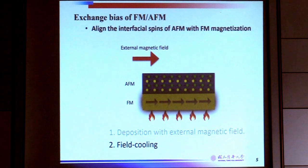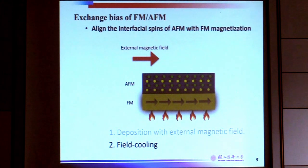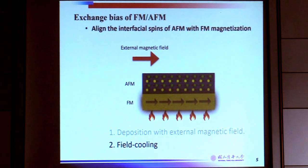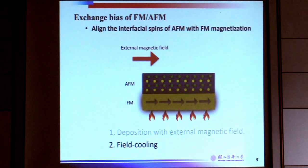Another way is to deposit bilayers without a field, and then do field annealing above the Néel temperature followed by field cooling, which also establishes exchange bias. You can see that with these two conventional methods, if you would like to switch the direction of the exchange bias, you have to raise the temperature above the so-called blocking temperature and apply an external field to switch the exchange bias.